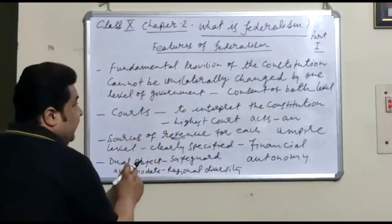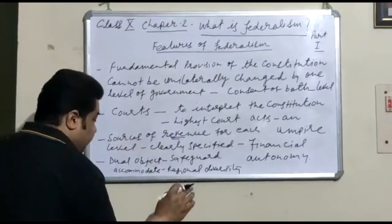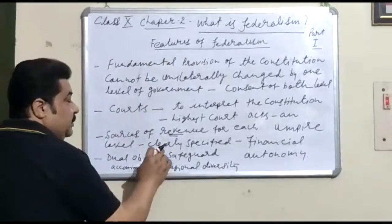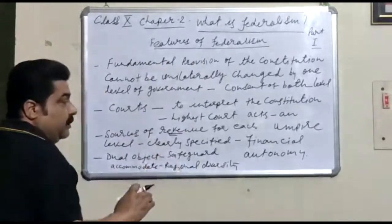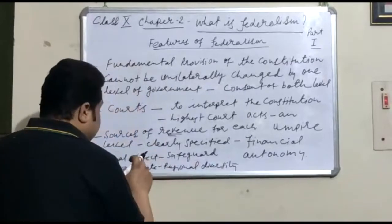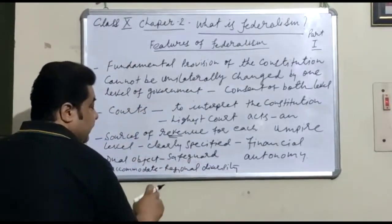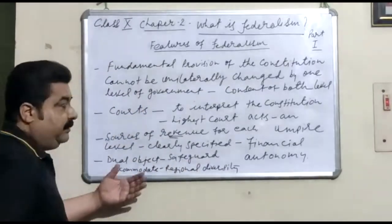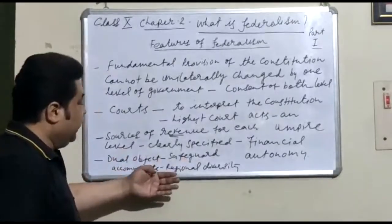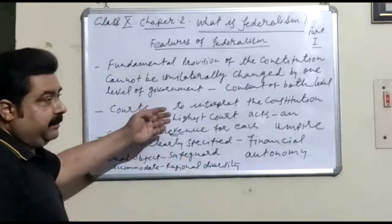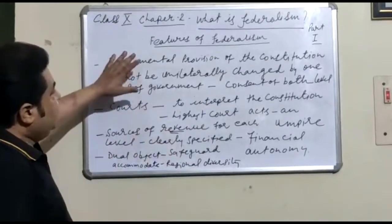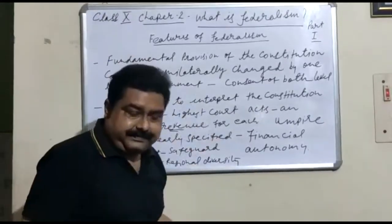The next feature is that federalism has two dual objectives. One objective is to safeguard and promote national unity. The second is to accommodate regional diversity — as we saw in the example of Sri Lanka, where diversity was not accommodated, compared to Belgium where it was accommodated. These are the features of federalism.